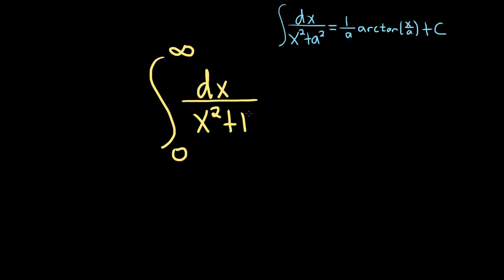So in this problem here, it's really 1 squared. So this is just going to be 1 over 1 arctangent of x over 1 plus C. So we'll have arctan x, basically.